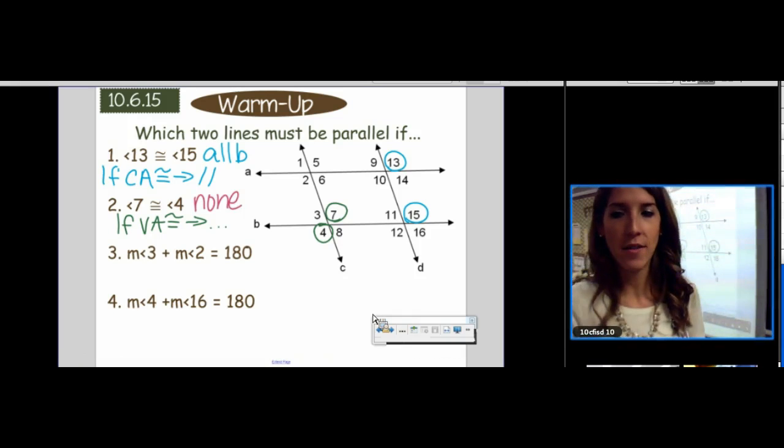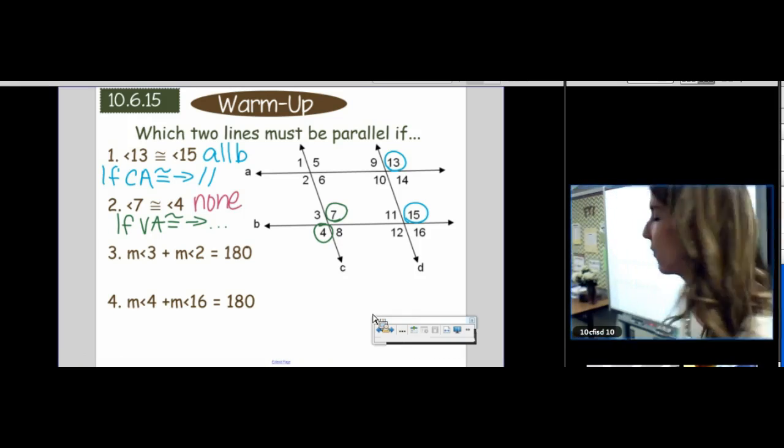No lines are parallel if seven is congruent to four. It doesn't force anything.